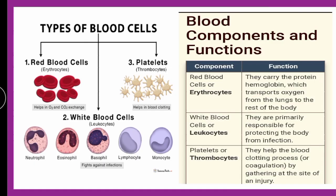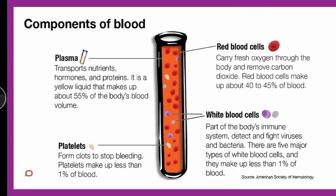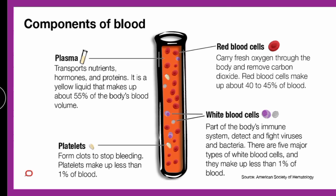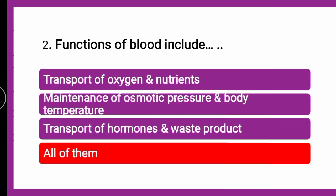So the functions include both the cellular fraction and plasma fraction. The correct answer is all of them — transport of oxygen and nutrients done by RBCs, maintenance of osmotic pressure and body temperature, and transport of hormones and waste products, which is the function of plasma.